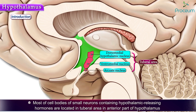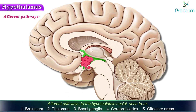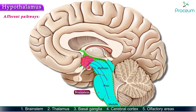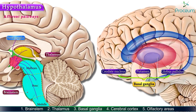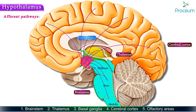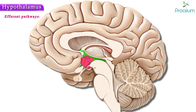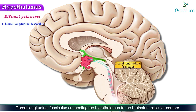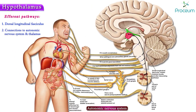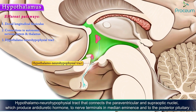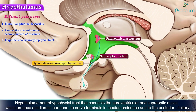Afferent pathways to the hypothalamic nuclei arise from the brainstem, thalamus, basal ganglia, cerebral cortex, and olfactory areas. Efferent pathways include the dorsal longitudinal fasciculus, connecting the hypothalamus to the brainstem reticular centers, connections to the autonomic nervous system and the thalamus, and the hypothalamo-neurohypophysial tract that connects the paraventricular and supraoptic nuclei — which produce antidiuretic hormone — to the nerve terminals in the median eminence and to the posterior pituitary.